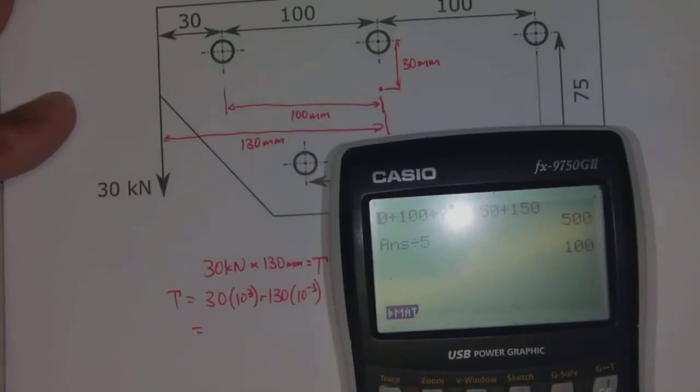And then we can calculate that value. So 30 times 10 to the 3 times 130 times 10 to the minus 3.